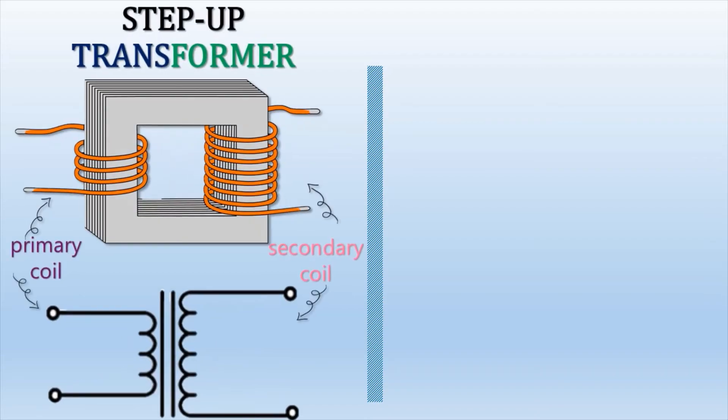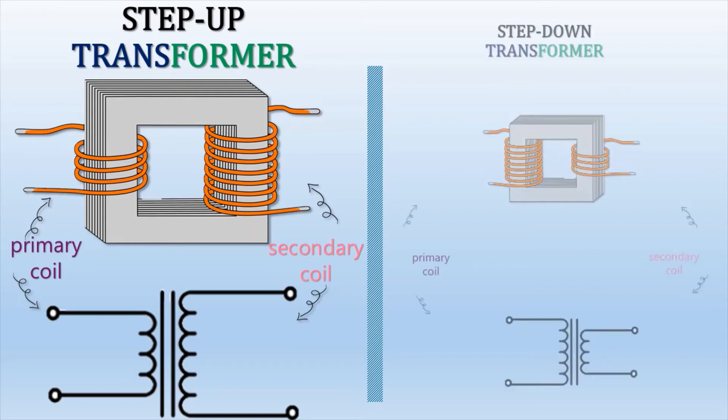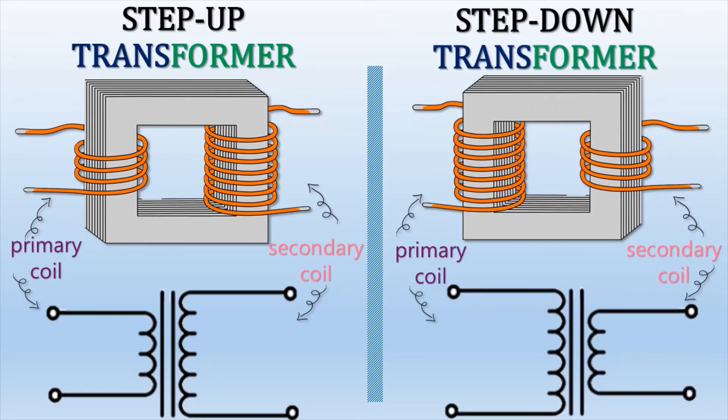How do we draw the symbol for the Step-Up Transformer and the Step-Down Transformer respectively? It is easy to determine the number of primary coils and secondary coils for both Transformers. The number of turns on the secondary coil is greater than the primary coil for the Step-Up Transformer. Draw the opposite way for the Step-Down Transformer — the number of turns on the primary coil is greater than that of the secondary coil.